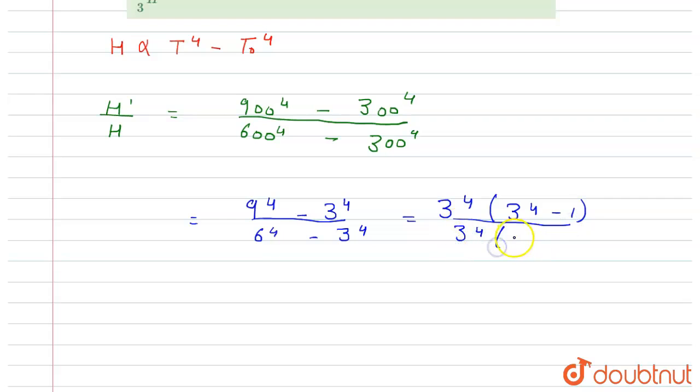Right, so in this 3 raised to power 4 cancels with 3 raised to power 4 and we at last get 80 divided by 15 equals 16 divided by 3.